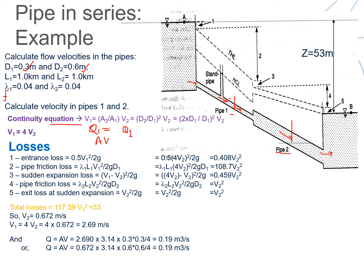Q equals area times velocity, so A1·V1 = A2·V2. Area equals π·d²/4, so substituting the diameters d1 and d2 we get V1 = (A2/A1)·V2, which gives V1 = 4·V2. That means the velocity in pipe 1 is 4 times the velocity in pipe 2.